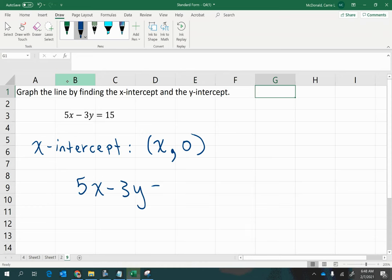it's very convenient for me to simply replace the y value with 0 and simplify and solve for x so that I can know what the x-coordinate that corresponds with a y-coordinate of 0 should be. So negative 3 times 0 simplifies to 0,